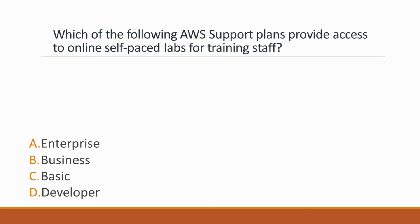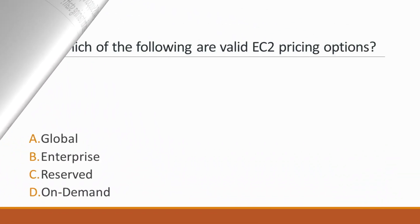Next question: Which of the following AWS support plans provide access to online self-paced labs for training staff? Options: A. Enterprise, B. Business, C. Basic, D. Developer. Correct answer is option A, Enterprise, because only the enterprise support plan provides access to online self-paced labs.